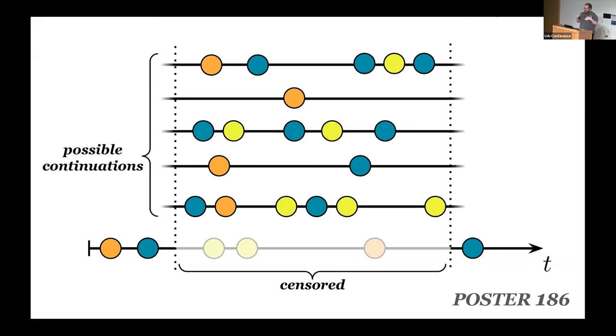What our work proposes and derives is a way of marginalizing out this portion of the sequence for a variety of different scenarios, such as mixtures of different intervals, some or all of the event types being censored or not. And furthermore, this is done in a model agnostic fashion, so it's applicable towards any marked temporal point process, so long as it has a well defined intensity function.